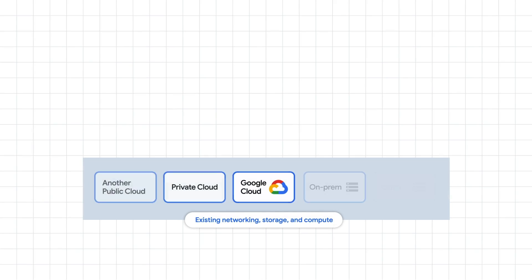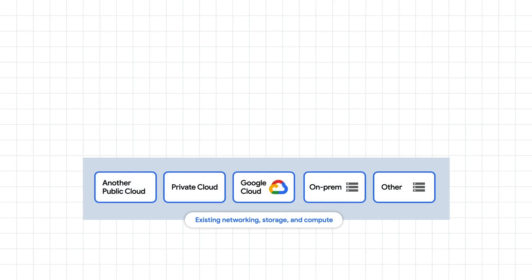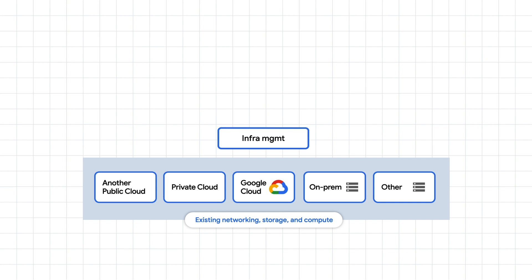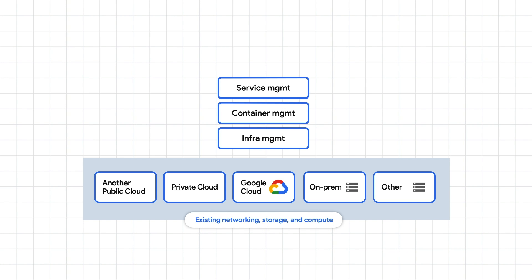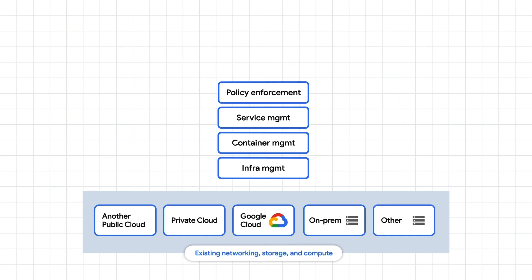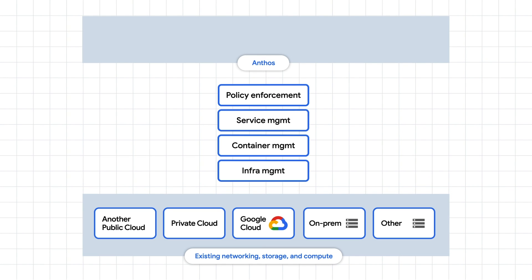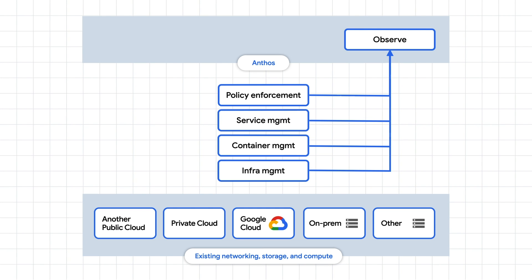Anthos helps solve these challenges. With Anthos, you get a consistent way to manage with similar infrastructure management, container management, service management, and policy enforcement across your platform. As a result, you gain observability across your platforms in one single place, including business information, alerts, and operational information.